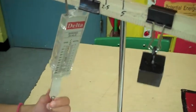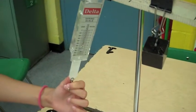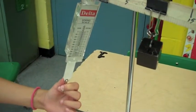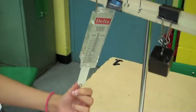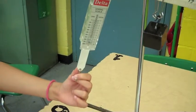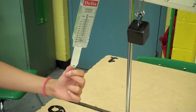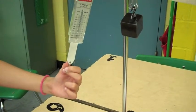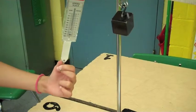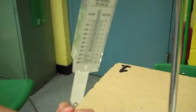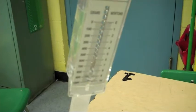We're using this spring scale that goes to 1,000 grams, and we're trying to balance it out. So we're going to pull to balance this out with a 1,000-gram scale. We have this at 900 grams.